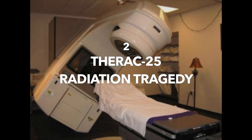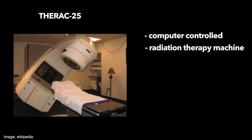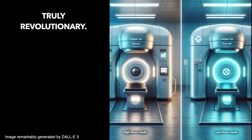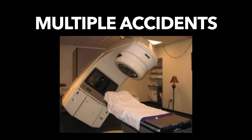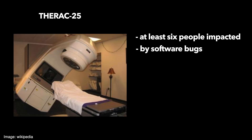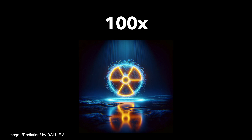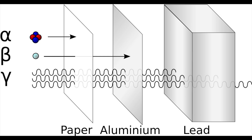Number two: the Therac-25 radiation tragedy. The most tragic software mistake in history is probably the Therac-25 radiation situation. The Therac-25 was a computer-controlled radiation therapy machine used in the 1980s, designed to treat cancer patients by delivering controlled beams of high-energy electrons or X-rays to tumors. It was revolutionary because it supported both low-power and high-power modes, meaning hospitals no longer needed two separate machines. Tragically, at least six people were impacted by a software bug, receiving massive radiation overdoses — in some cases hundreds of times the intended dose — resulting in three deaths.